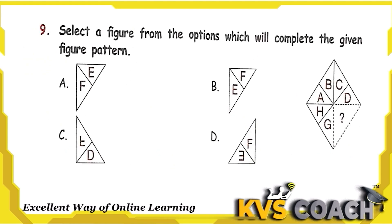The next question: select a figure from the options which will complete the given figure pattern. The pattern follows a sequence a, b, c, d, e, f, g, h. So the missing position should have e and f. Option B has f, e — but we need e then f by the sequence. All other options are also incorrect. Option A is the right answer.